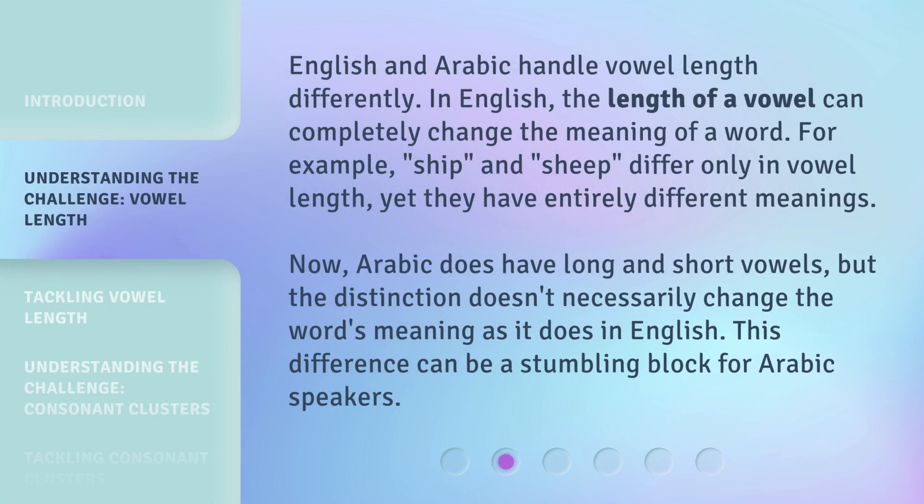English and Arabic handle vowel length differently. In English, the length of a vowel can completely change the meaning of a word. For example, 'ship' and 'sheep' differ only in vowel length, yet they have entirely different meanings. Now, Arabic does have long and short vowels, but the distinction doesn't necessarily change the word's meaning as it does in English. This difference can be a stumbling block for Arabic speakers.